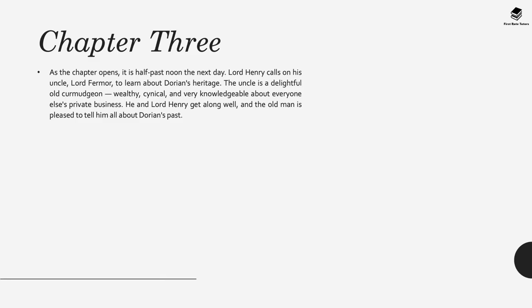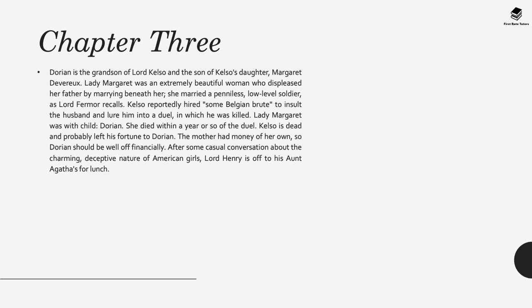In chapter three, it's half past noon the next day. Lord Henry calls on his uncle Lord Firmer to learn a little about Dorian's heritage. His uncle is a delightful old curmudgeon—wealthy, cynical and very knowledgeable about high society—and he and Lord Henry delve into Dorian's past. We learn that Dorian is the grandson of Lord Kelso. Kelso's daughter Lady Margaret was an extremely beautiful woman who displeased her father by marrying beneath her—a penniless low-level soldier. Kelso hired a Belgian brute to insult her husband and lure him into a duel in which he was killed. Lady Margaret was pregnant with Dorian. She died within a year of the duel, and Kelso also ultimately died, leaving his fortune to Dorian. Dorian's mother also had money of her own, so we learn that Dorian is very well off financially.